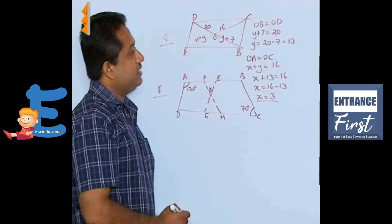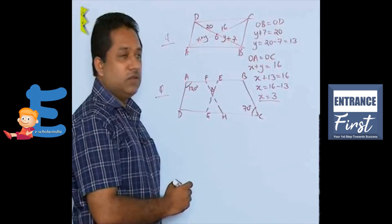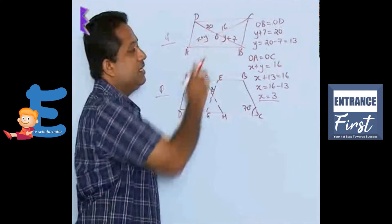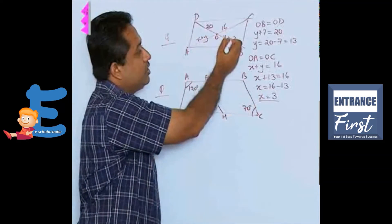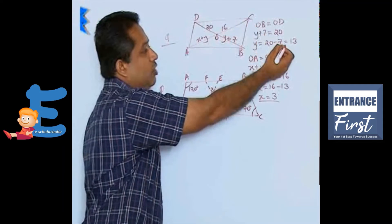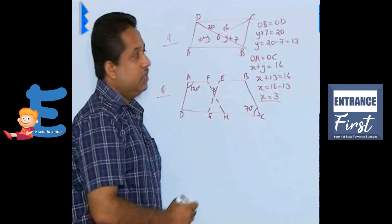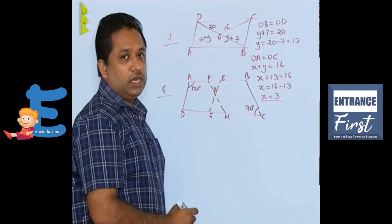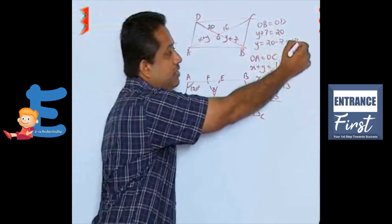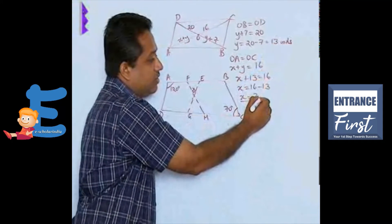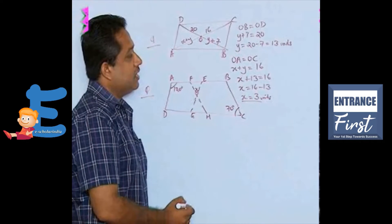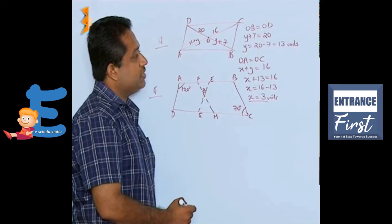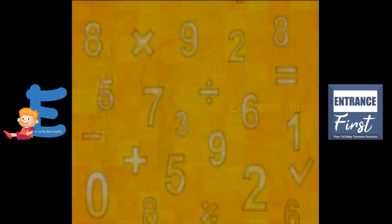The final answer is X equals 3 and Y equals 13, found using the property that diagonals of a parallelogram bisect each other. If units were given — for example, centimetres or metres — the answer should be expressed in those units. Since no unit is mentioned here, we write X as 3 units and Y as 13 units.